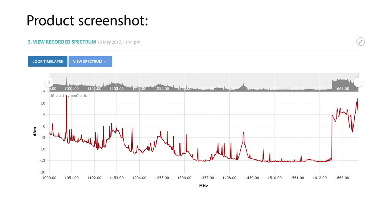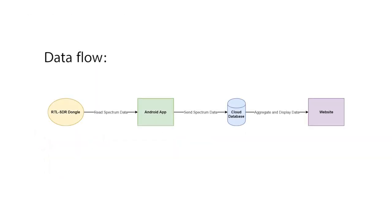This can be used to boost internet coverage, connect more voice calls, or transmit more data concurrently. Our project, the real-time radio spectrum map, consists of an Android application and an RTL-SDR dongle, which records the radio spectrum in your current area.